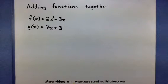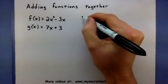f is 2x squared minus 3x, and g is 7x plus 3. So what I want to do is basically add the two together.